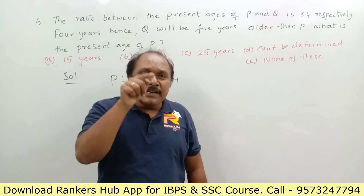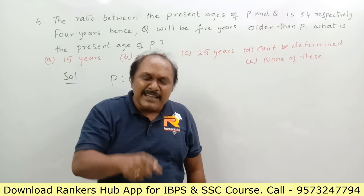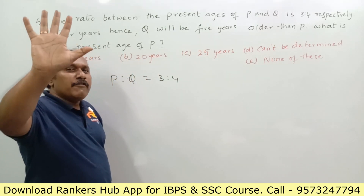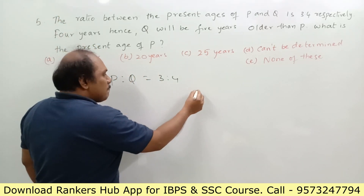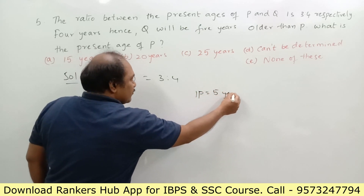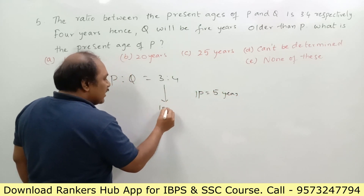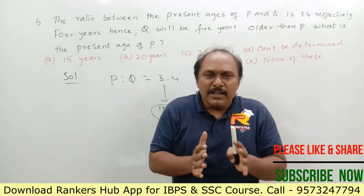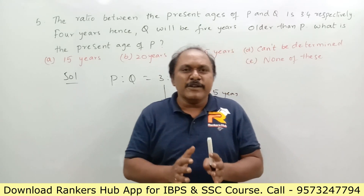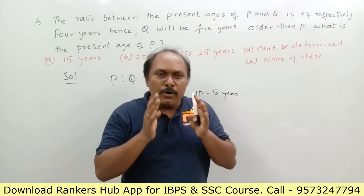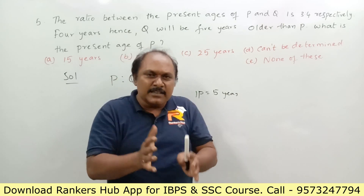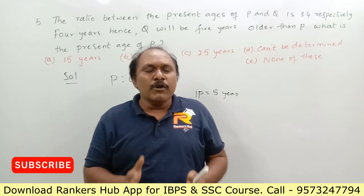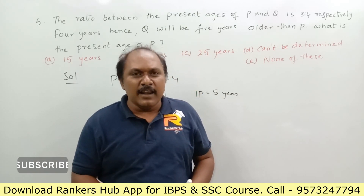The difference in ages of P and Q is always 5 years. In the ratio 3 is to 4, the difference is 1 part which equals 5 years. P's age is 3 parts, so 3 times 5 equals 15 years. The present age of P is 15 years. Many students fear they must write equations for age problems, but if you understand the question you can answer orally. Thank you for watching — please subscribe to our channel Rank Us Up.